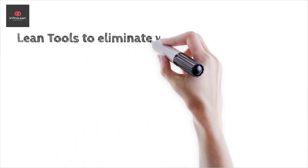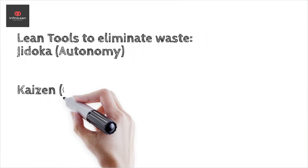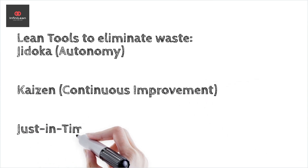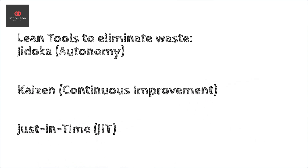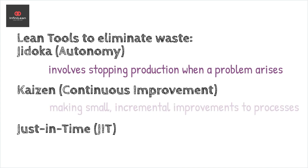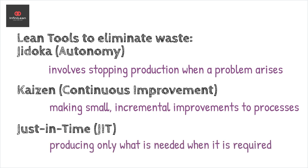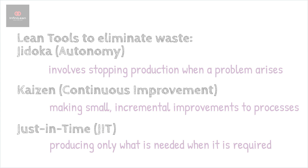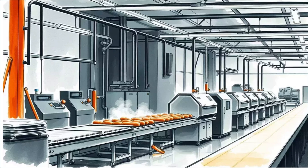There are three lean tools designed to help eliminate the three M's: Jidoka (Autonomation), Kaizen (Continuous Improvement), and Just-in-Time (JIT). Jidoka involves stopping production when a problem arises, preventing the production of defects. Kaizen focuses on making small, incremental improvements to processes. Just-in-Time refers to producing only what is needed, when it is required, and in the correct quantity. These tools work together to enhance efficiency and quality in production.